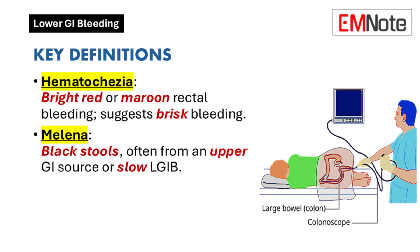Hematochezia refers to bright red or maroon-colored rectal bleeding, typically indicative of a lower gastrointestinal source. When hematochezia originates from an upper gastrointestinal source, it suggests rapid bleeding that may also present with hematemesis and signs of hemodynamic instability. About 10% of hematochezia episodes are associated with upper gastrointestinal bleeding.